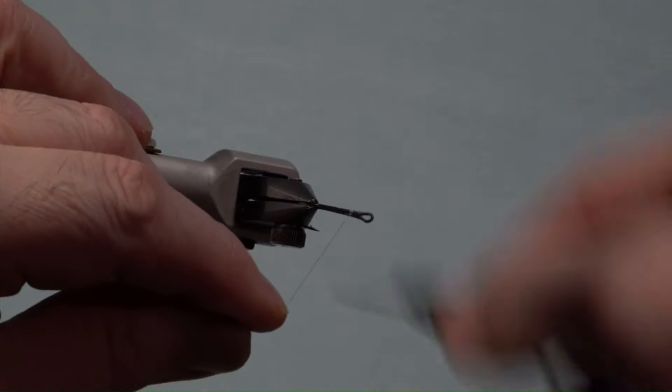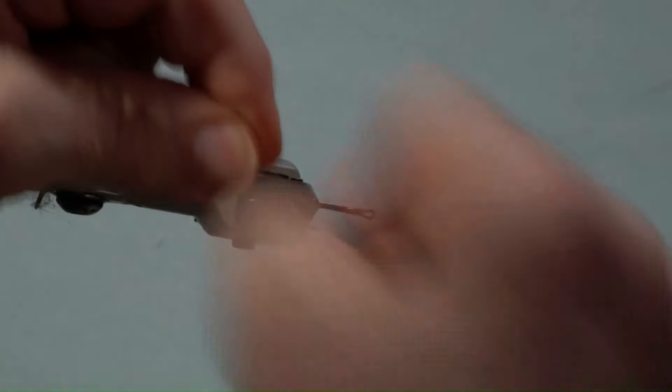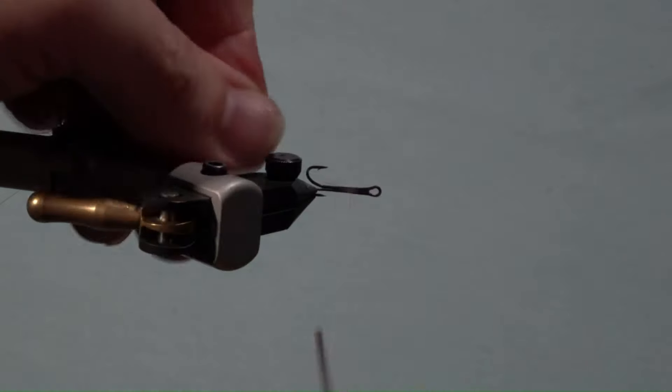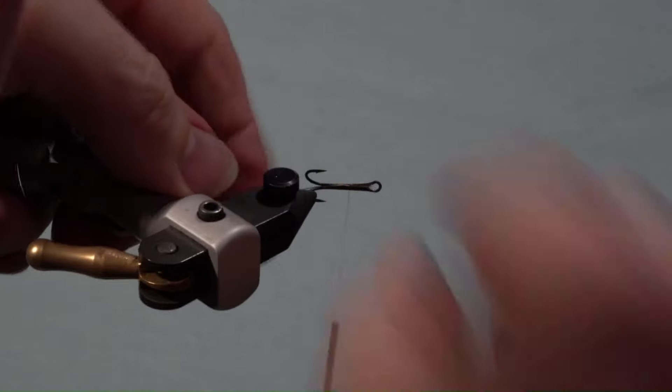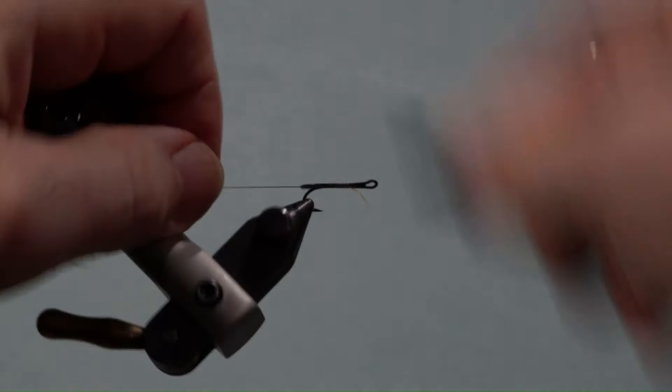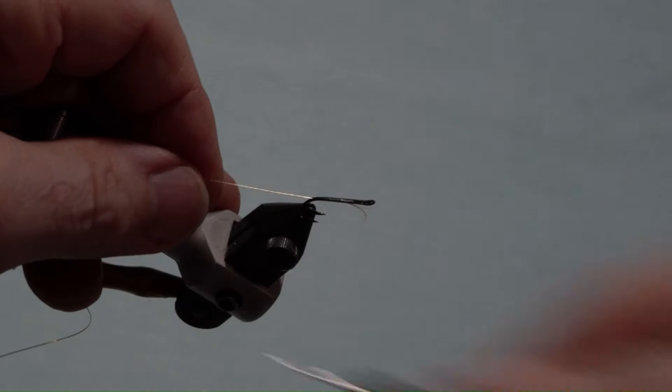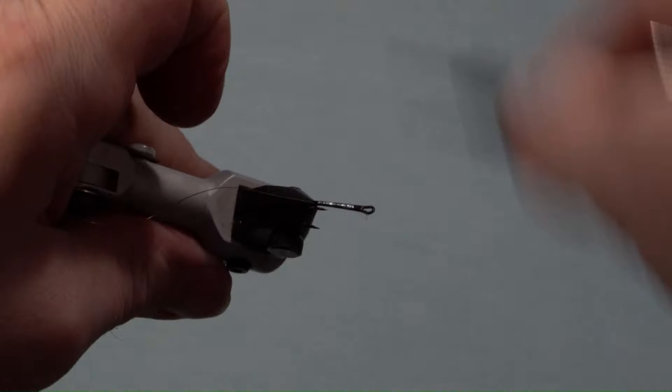Start the thread just behind the eye and trim the tag. Next, take the fine oval gold tinsel and strip the tinsel down to the core and secure it by the core underneath the hook at the start of the wrap. Measure the tinsel so the core ends at the straight portion of the hook and wrap the thread edge-to-edge to that point.